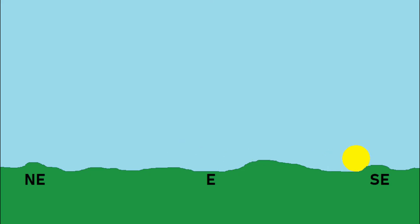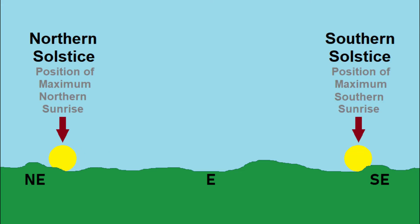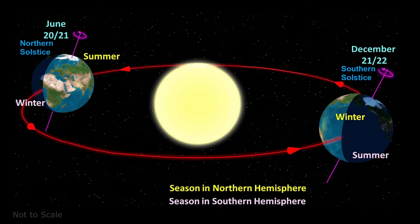The two maximum positions are called solstices, from the Latin for sun and stand still, and they can be distinguished as the northern solstice and the southern solstice. In the northern hemisphere, the northern solstice is more commonly referred to as the summer solstice, and the southern solstice is called the winter solstice. But in the southern hemisphere, it is the southern solstice that occurs in summer, and the northern solstice that occurs in winter.